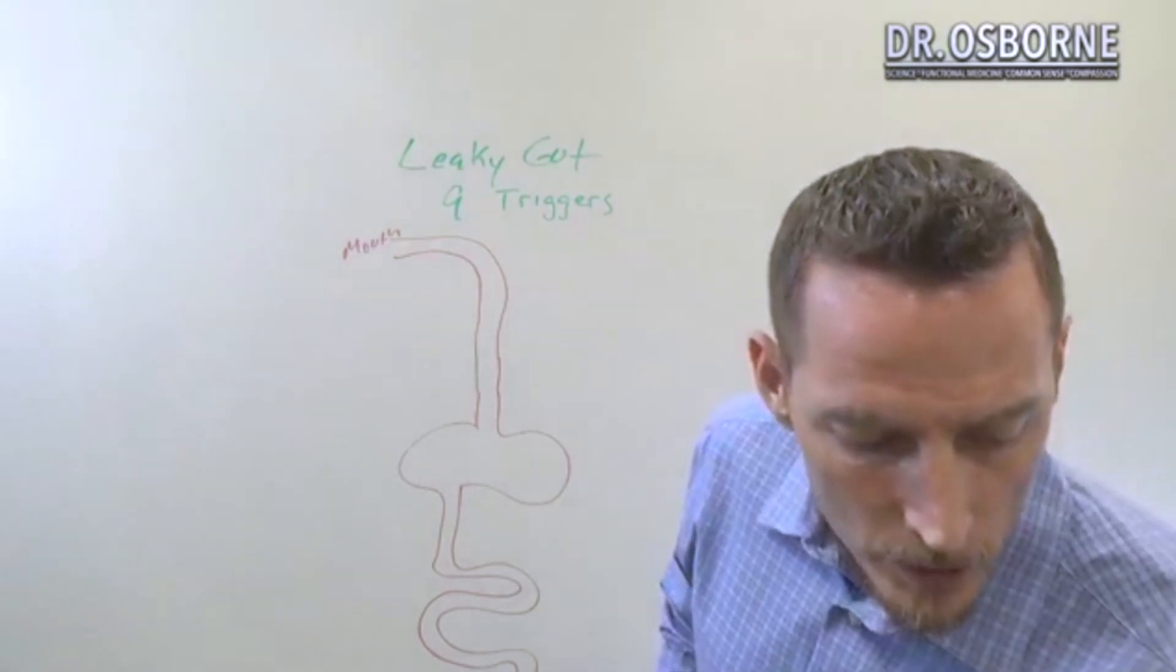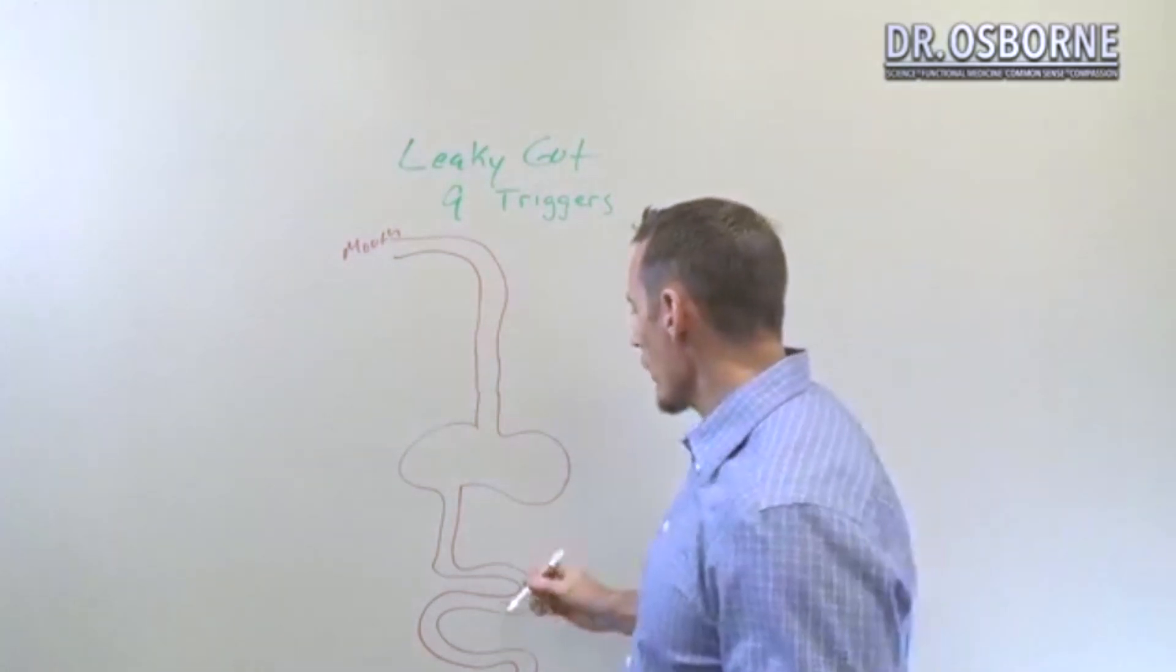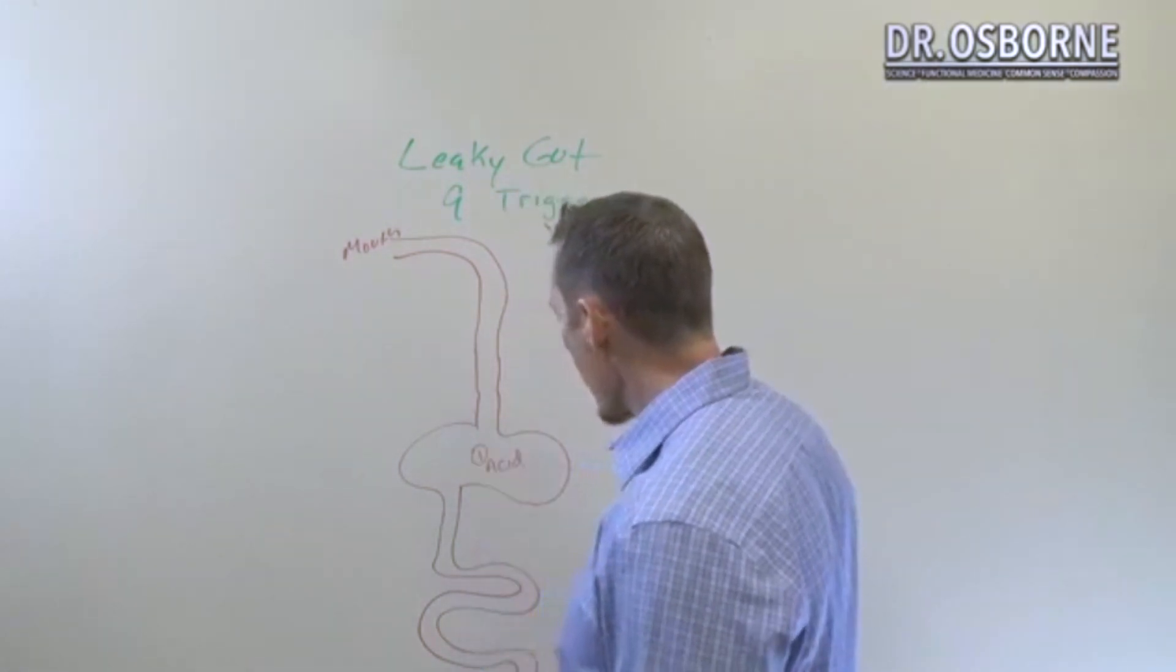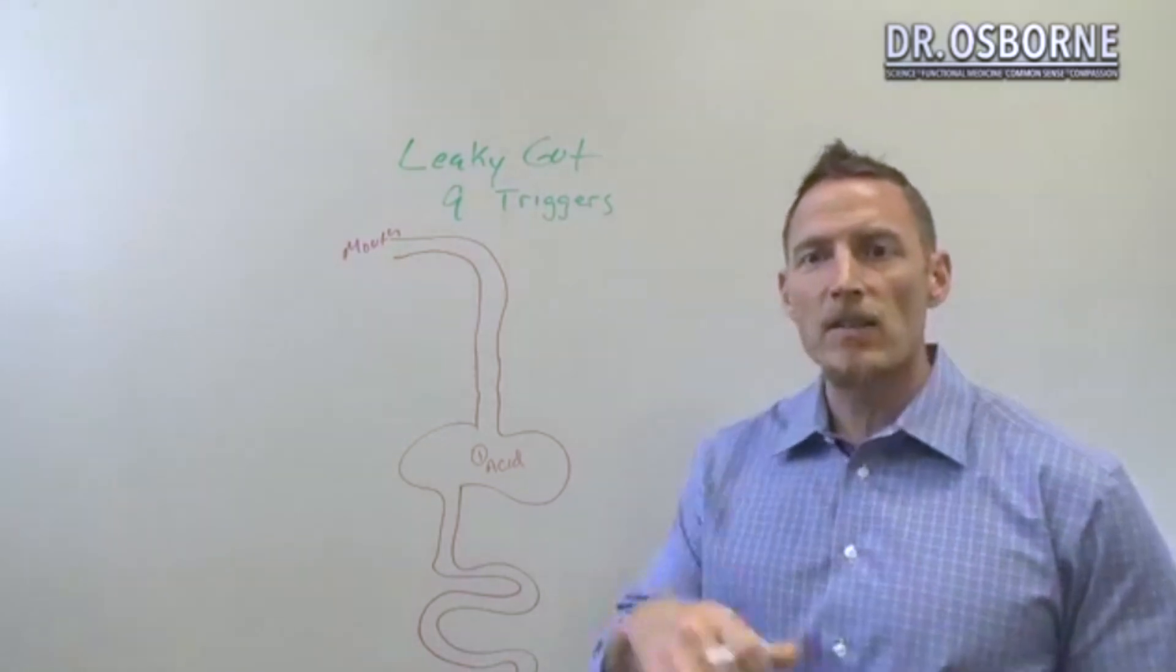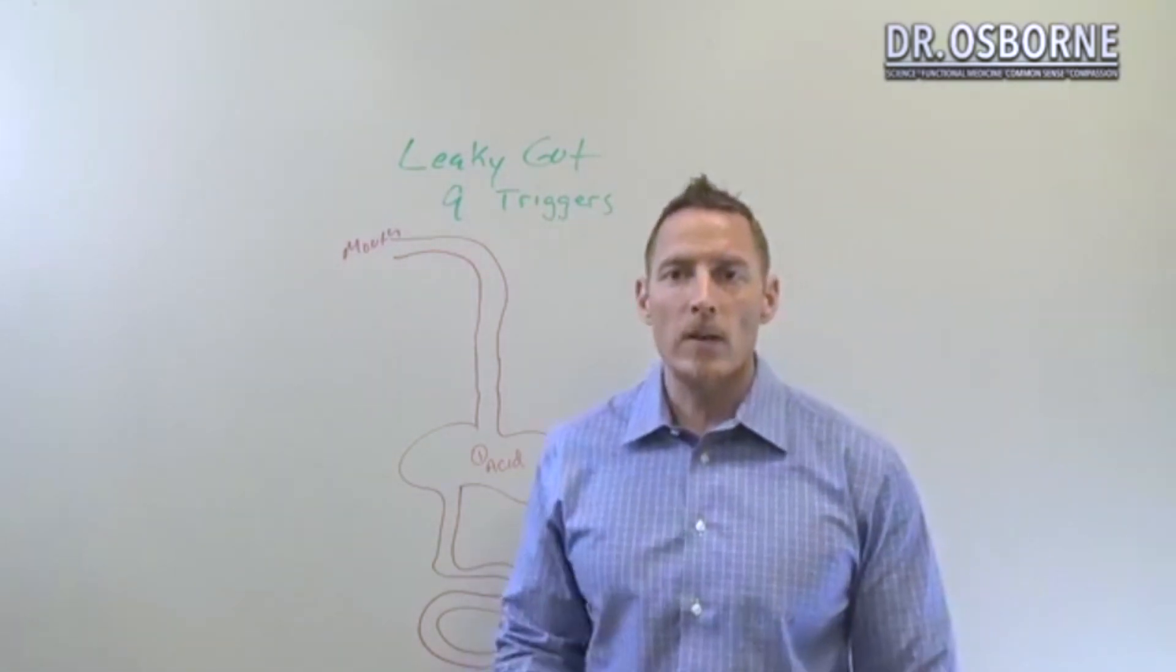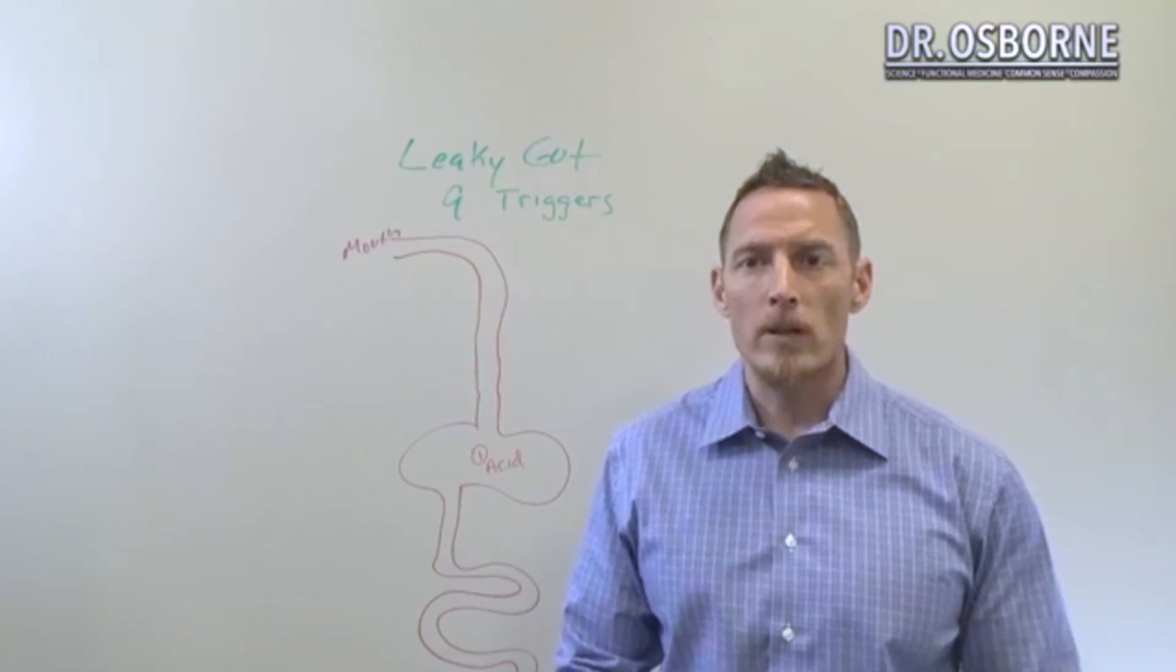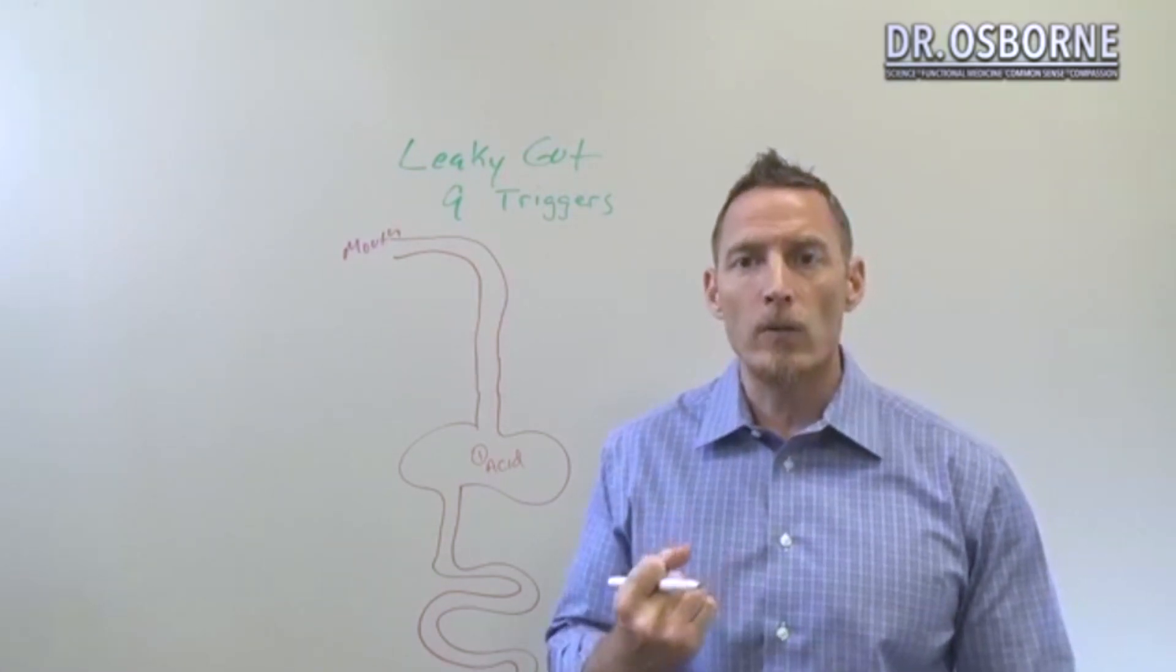So one of them is stomach acid - we'll call that barrier number one. We've got acid in the stomach and that acid's designed to kill bacteria, parasites, viruses, and other types of infectious microorganisms that we might come into contact with through our eating.